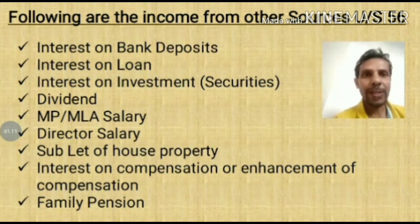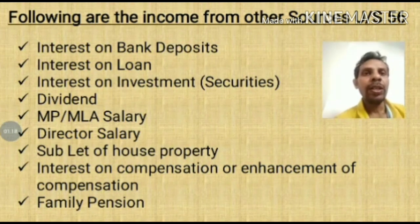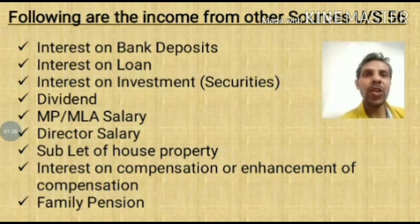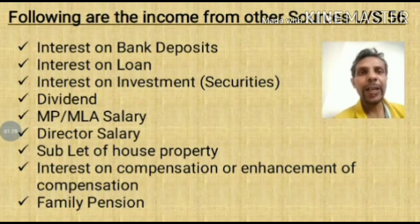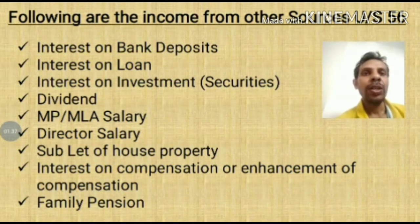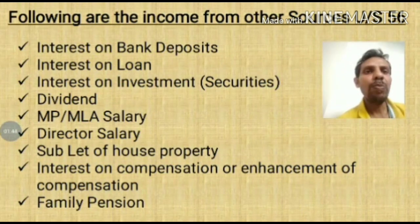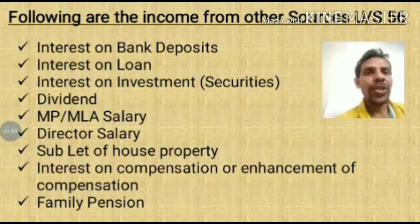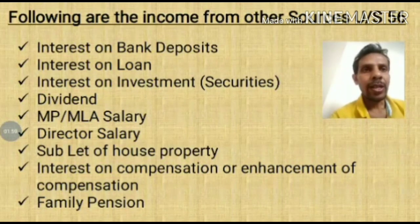Next is interest on loans. Sometimes the assessee gives a loan to a third party and receives interest — that is income to them, not related to the first four heads, so we take it here. Next is interest on investment or interest on securities. There are two kinds of investments: in movable property and immovable property. When investing in immovable property we don't receive interest, but when investing in securities we regularly receive interest, so it is income under other sources.